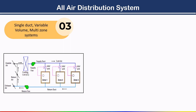In this system, a VAV unit — variable air volume — is used for each and every zone. This means you can vary the air flow rate. It is also called a multi-zone system.